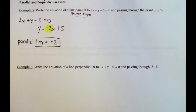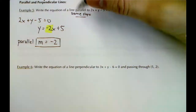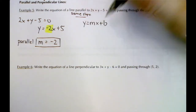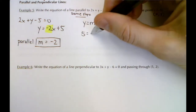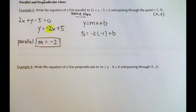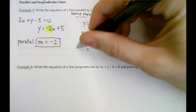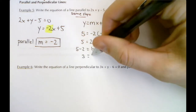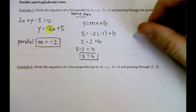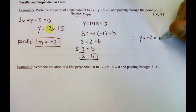Now we know the slope of the line we're writing and we have a point, giving us an x and a y. Using y = mx + b: plug in y = 5, m = -2, x = -1. Negative two times -1 is positive 2. Moving 2 to the other side by subtracting: b = 3. Since we know m = -2 and b = 3, the equation of our parallel line is y = -2x + 3.